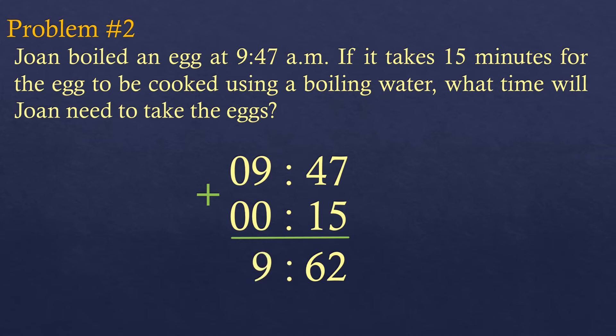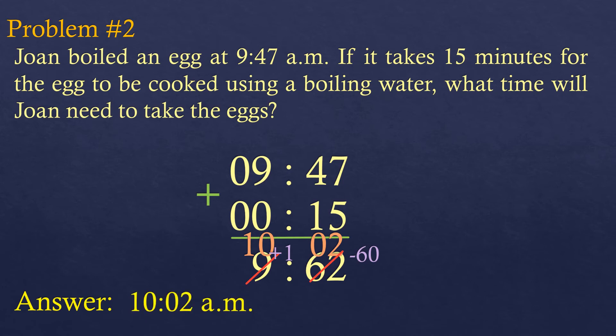Is it 9:62 in the morning? Observe that the minutes exceed 59 — there's no such thing as 62 or even 60 minutes. So we transfer 60 minutes to the hours, because 60 minutes equals 1 hour. The 62 becomes 2, and 9 plus 1 becomes 10. The question asks for time, so the answer is 10:02 AM.